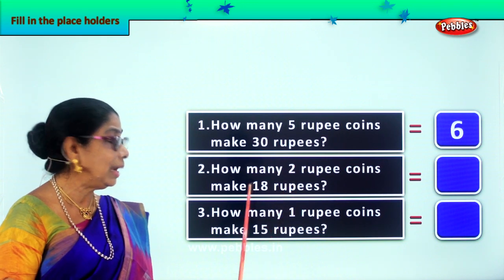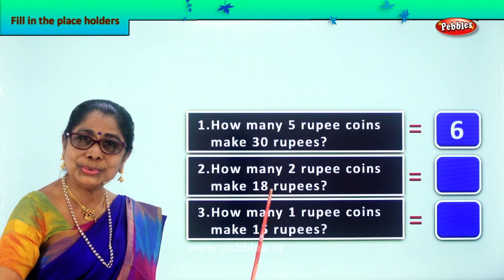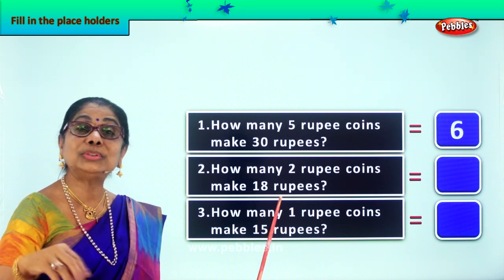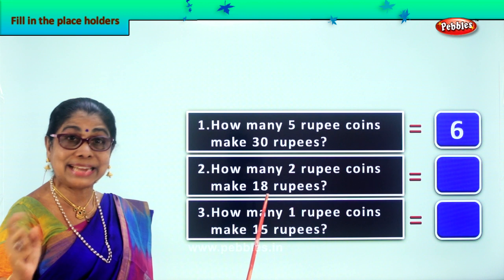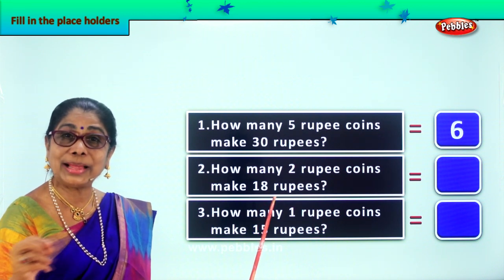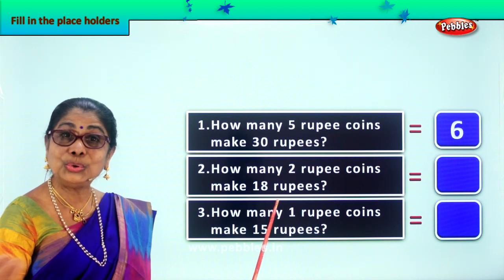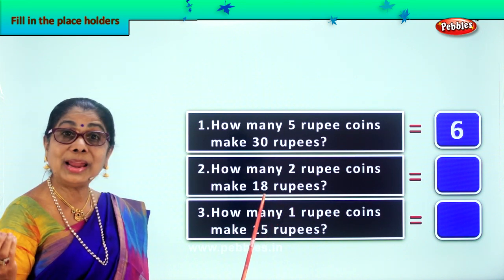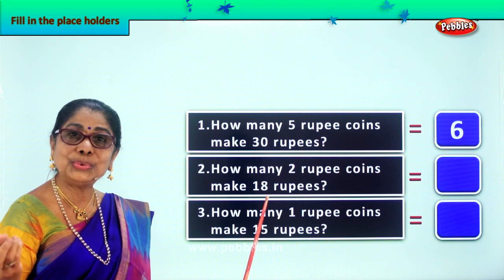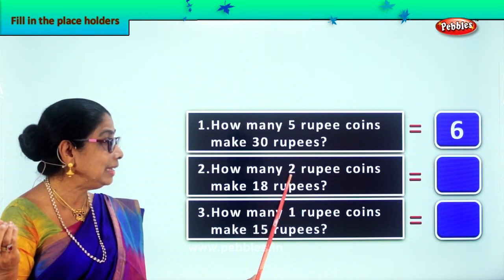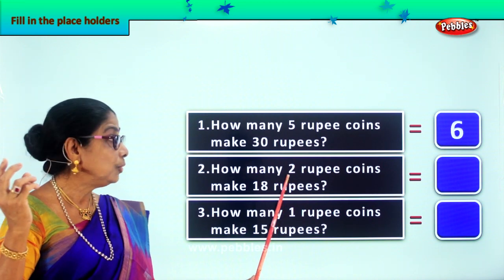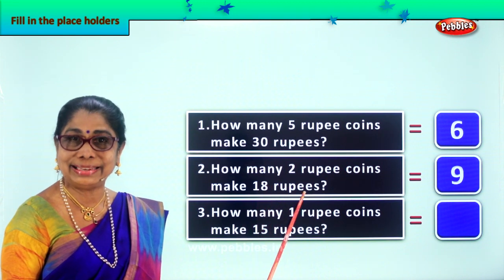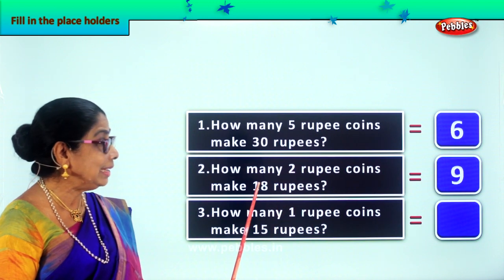2 ones are 2, 2 twos are 4, 2 threes are 6, 2 fours are 8, 2 fives are 10, 2 sixes are 12, 2 sevens are 14, 2 eights are 16, 2 nines are 18. So from the 2 times table, we need 9 two-rupee coins to make 18 rupees.